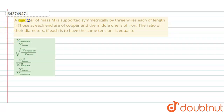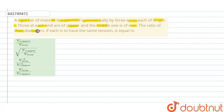A rigid bar of mass capital M is supported symmetrically by three wires, each of length L. Those at each end are of copper and the middle one is of iron. The ratio of their diameters, if each is to have the same tension, is equal to?